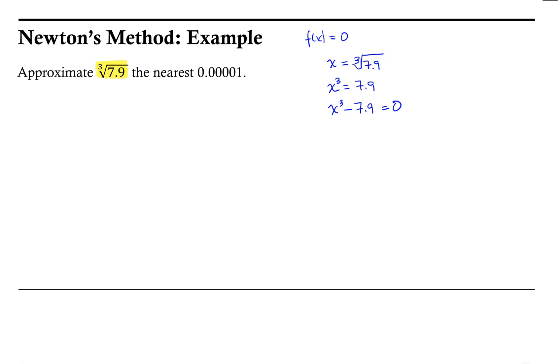Now at this point, I have something that resembles a function equaling 0. So I could use Newton's method on this function to approximate this value, because the cube root of 7.9 will be a 0 of the function x cubed minus 7.9. So the function we're going to be interested in here is x cubed minus 7.9.